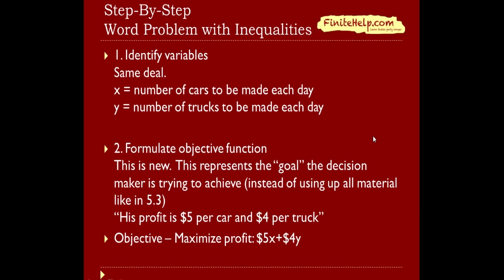The second step is new: formulating the objective function. The objective function represents the goal that the decision maker is trying to achieve, instead of just using up all the material like in 5.3. The sentence says his profit is $5 per car and $4 per truck. Since x is the number of cars and y is the number of trucks, he receives 5 times x for selling cars and 4 times y for selling trucks. So the profit function is 5x plus 4y, and his objective is to maximize this.